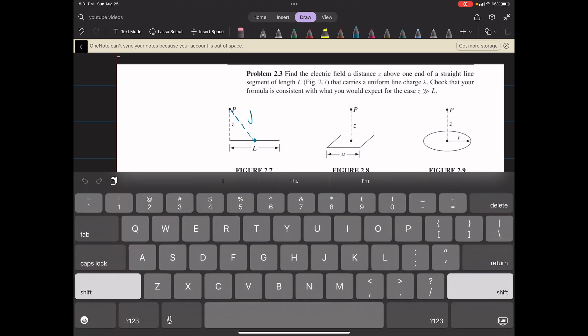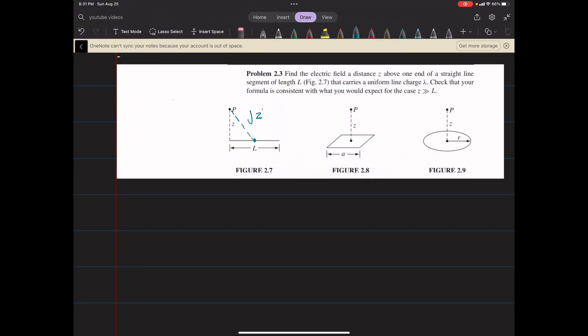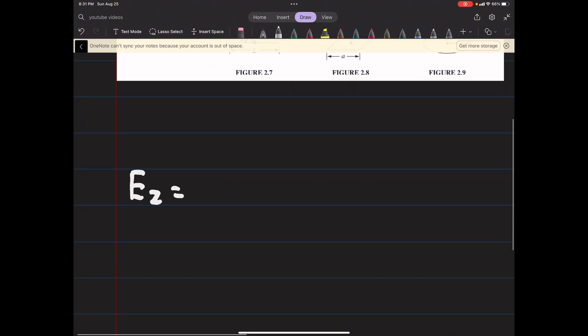We'll call this angle here theta, and our electric field will look something like this. We're going to have an electric field in the x direction and an electric field in the z direction. We'll start with the z direction.